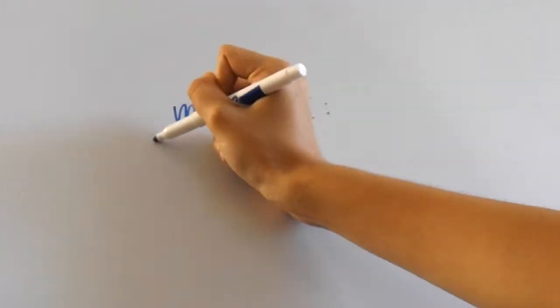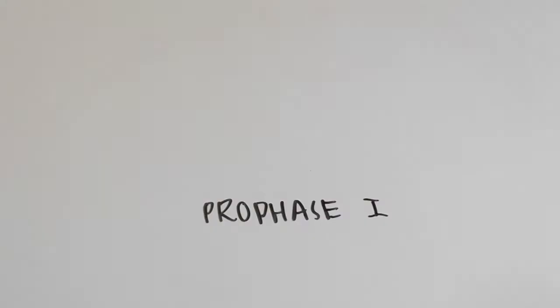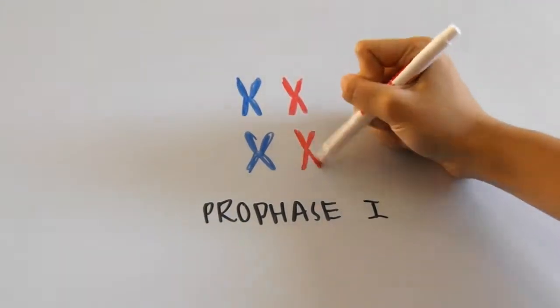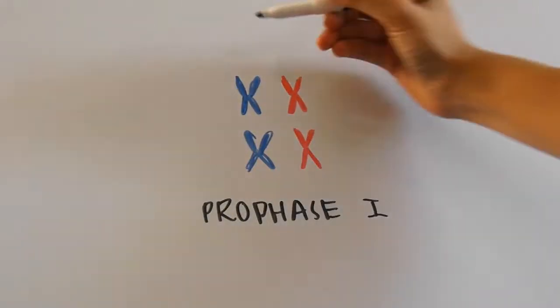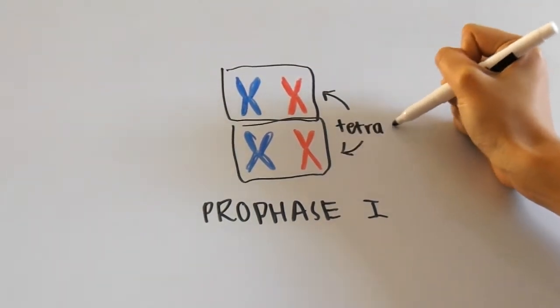Meiosis 1 is when homologous chromosomes separate from each other. So let's take a closer look at it. Here's what it looks like when prophase 1 occurs. Let's say that the red chromosomes are the ones from the mother and the blue chromosomes are from the father. The same chromosomes from each of the parents pair up and form this complex called a tetrad.